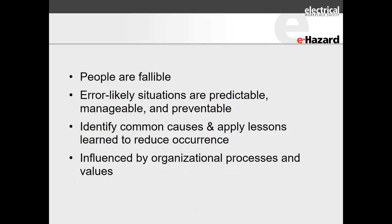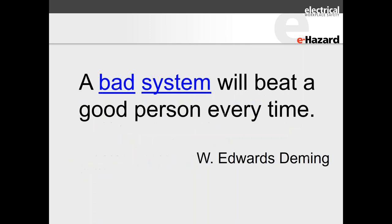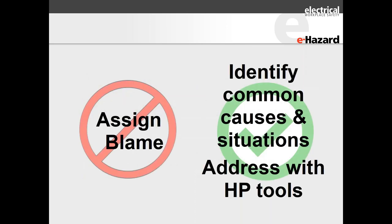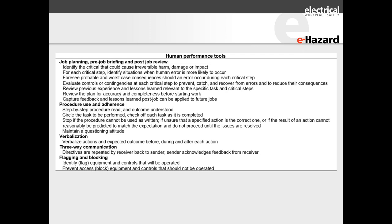People are fallible, error-likely situations are predictable, identify common causes and apply lessons. They're influenced by organizational processes and values. Walter Deming, who put the plan-do-check-act cycle in place, said a bad system will beat a good person every time. You don't assign blame — identify the common causes and situations and fix them with human performance tools. Human performance tools include job planning, pre-job briefing, post-job review, and procedural use and adherence. These portions are what you document in a job safety plan — a real alignment pulling all components of a quality safety management system together in 70E.